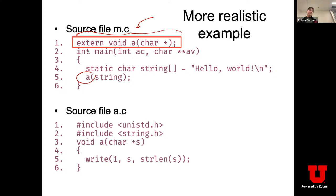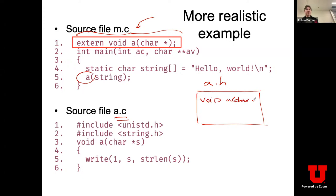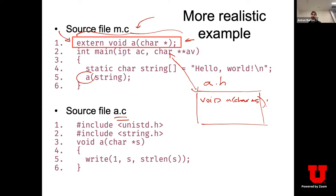In practice, alongside a.c you would have a header file a.h containing 'void a(char *s)'. This is the same as writing the extern declaration inline, but the header can be shared between multiple files using include. You can group multiple functions and provide definitions of data structures. C's approach to modularity isn't the best, but it's 50 years old. This line in the include file is equivalent to the external declaration — they serve the same purpose.